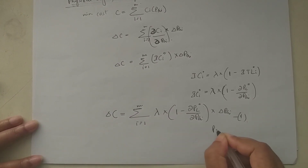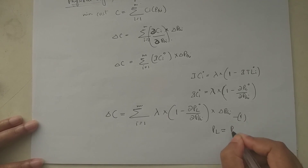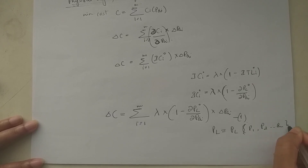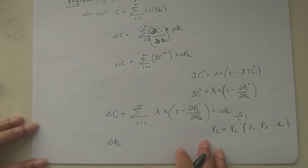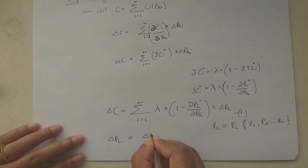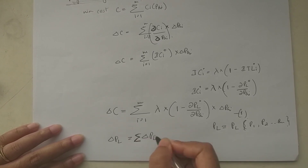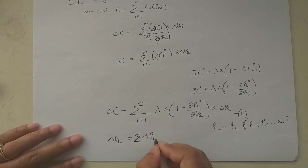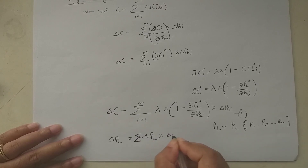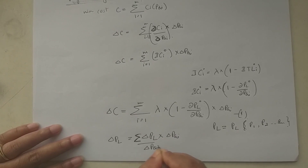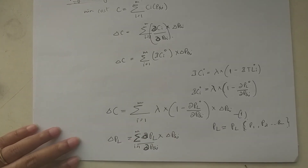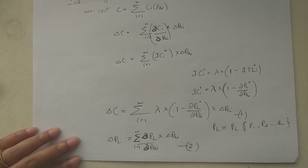Since the loss P_L is a function of real power generation at each individual plant, the small change in loss delta P_L can be written as: delta P_L = summation of (∂P_L/∂P_Gi) times delta P_Gi for i = 1 to m — take this as equation 2.